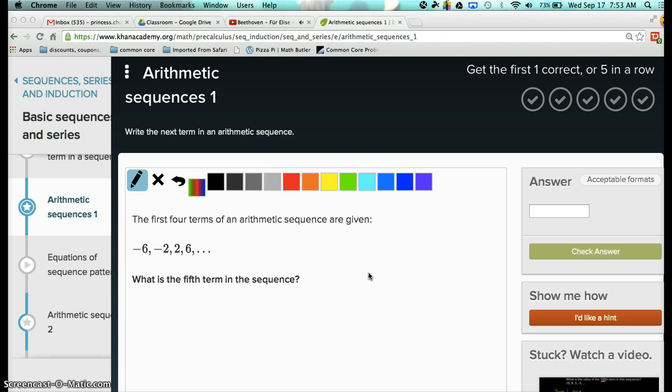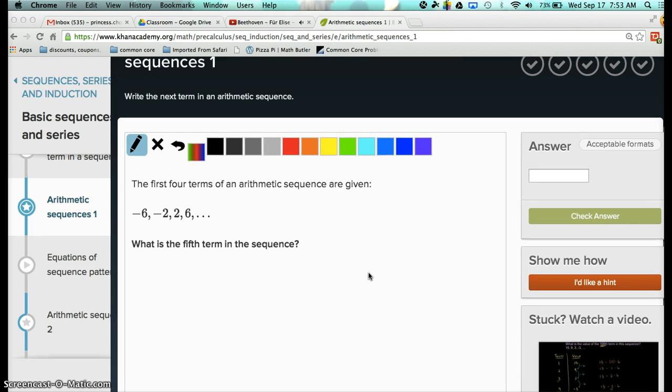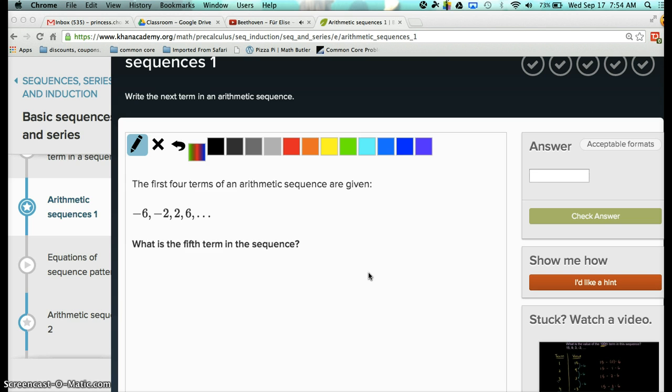Let's take a look at Arithmetic Sequences 1. It says the first four terms of an arithmetic sequence are given, and we have negative 6, negative 2, positive 2, 6, dot dot dot, right? So you can see a pattern right here. So then what is the pattern that you see here? What are you adding by? The pattern I see is it goes up by 4 every time. Yeah, you're adding 4 every single time.